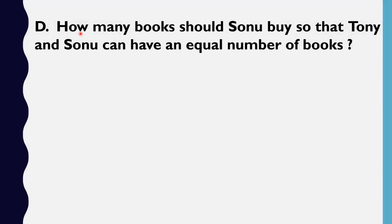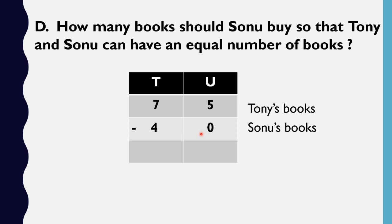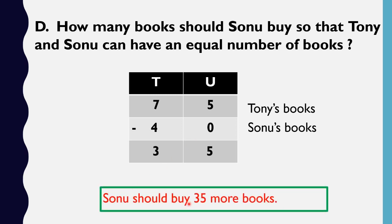The 4th one: how many books should Sonu buy so that Tony and Sonu can have an equal number of books? Tony has 75 books and Sonu has 40 books. We do subtraction: 5 units minus 0 units is 5, and 7 tens minus 4 tens is 3 tens. The answer is 35. So Sonu should buy 35 more books.